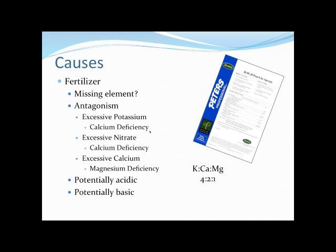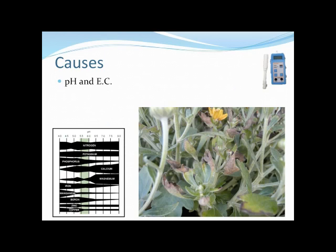All fertilizers are either potentially acidic or potentially basic. Along with water alkalinity, this will drive the pH of our substrate up or down. We've all seen the chart showing pH ranges and element availability. We typically recommend growers keep their pH between about 5.5 and 6.0 because that's the sweet spot where most elements are available at an ideal level. Getting outside of that range starts to create problems.